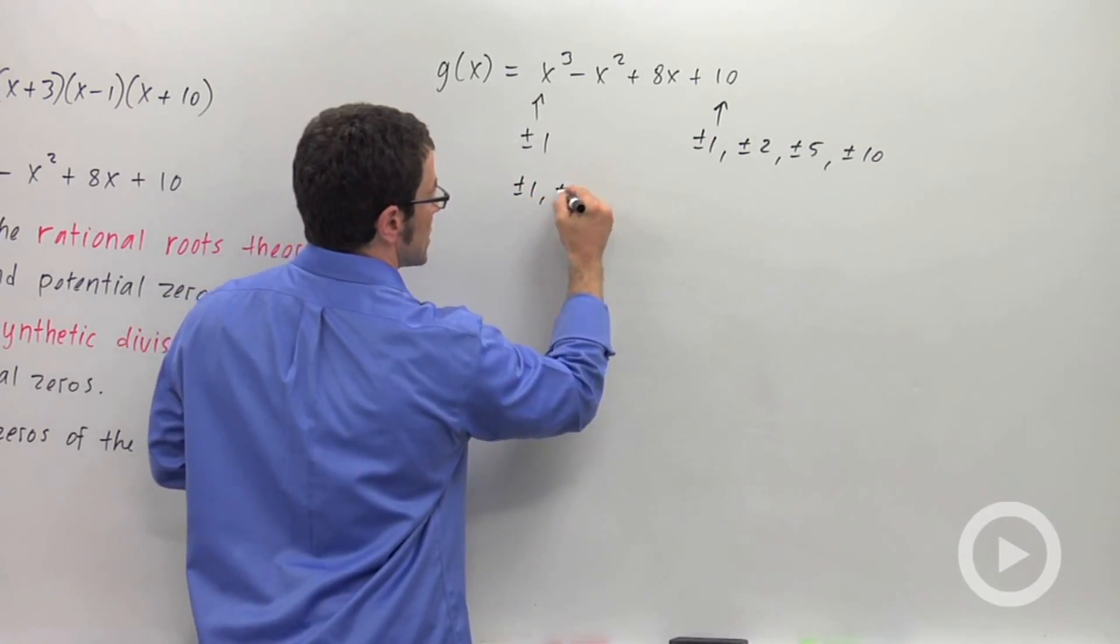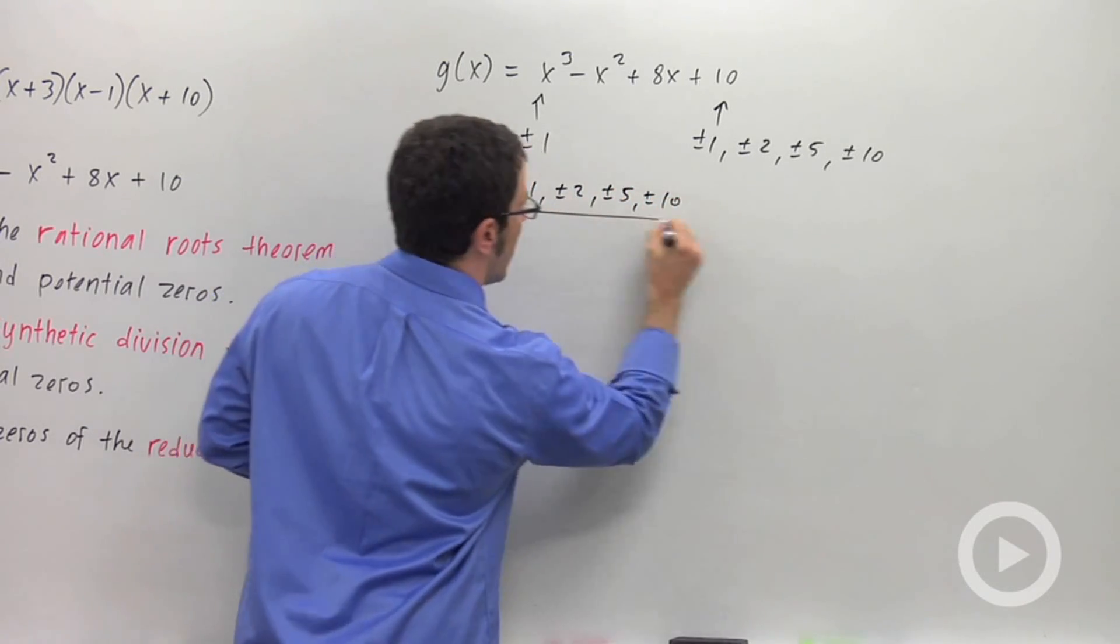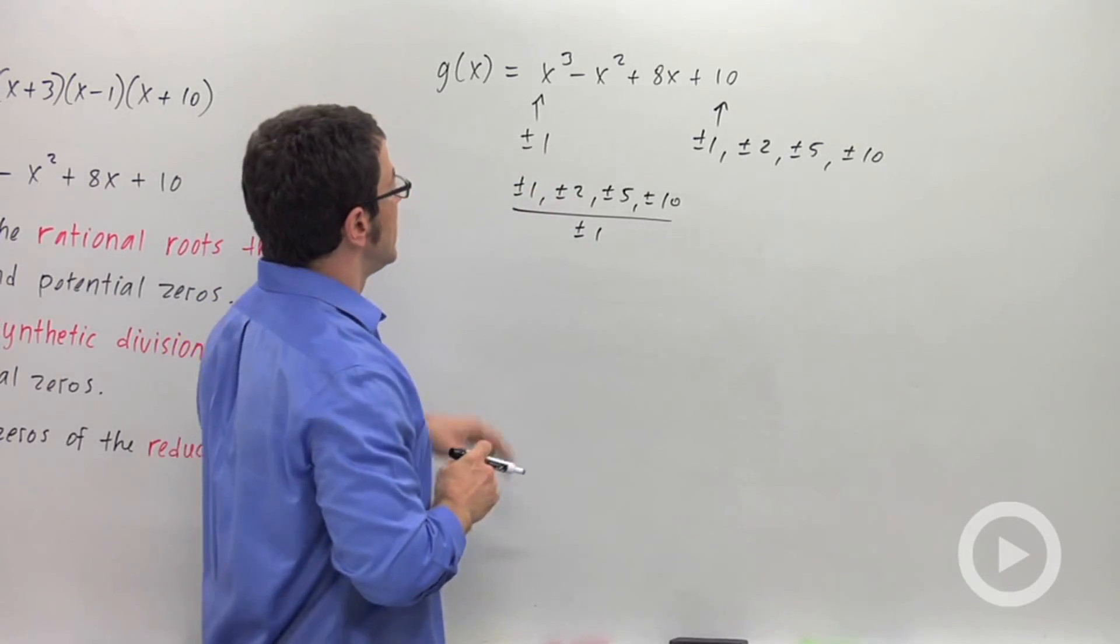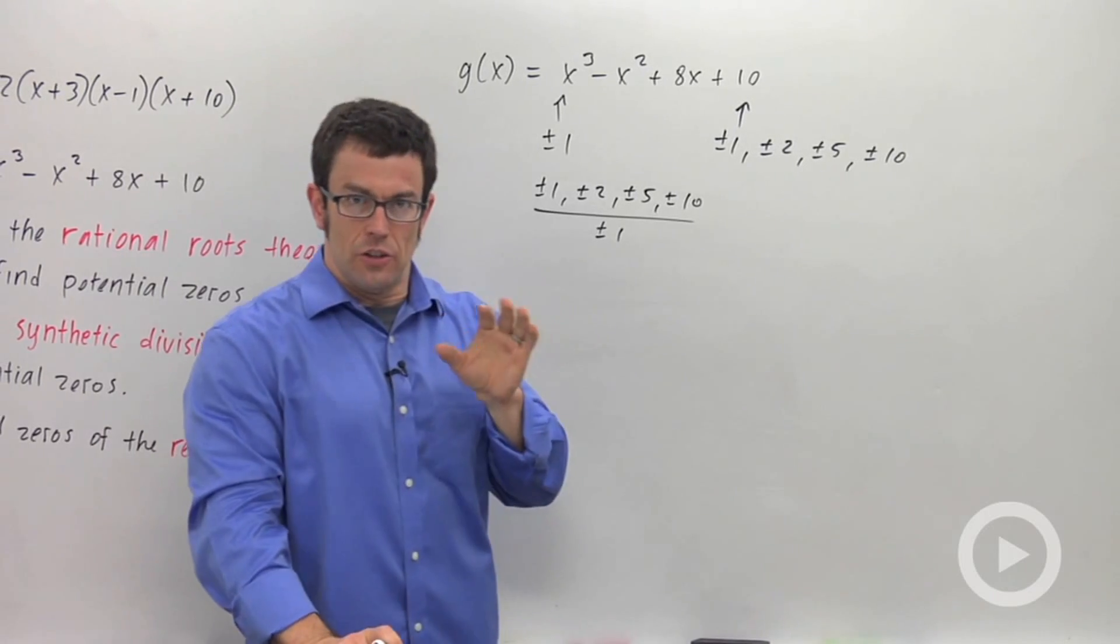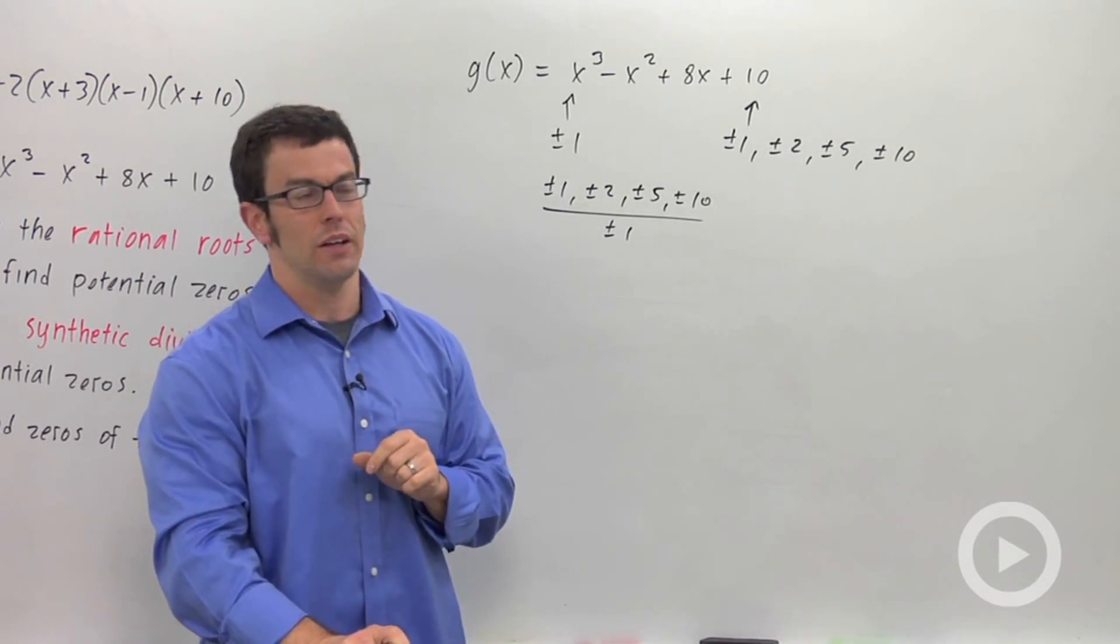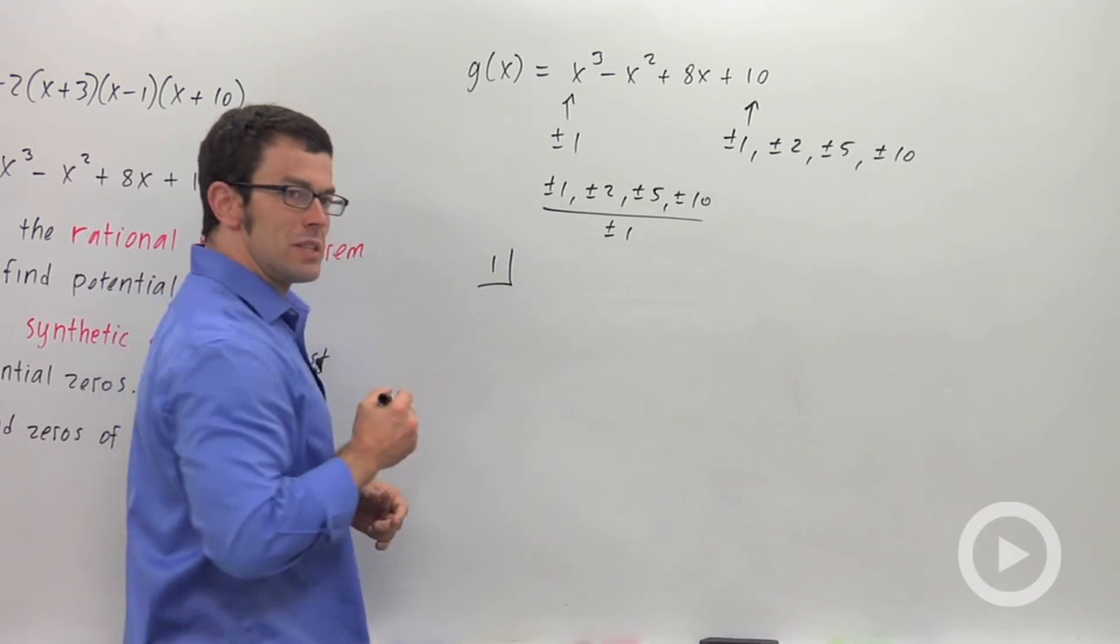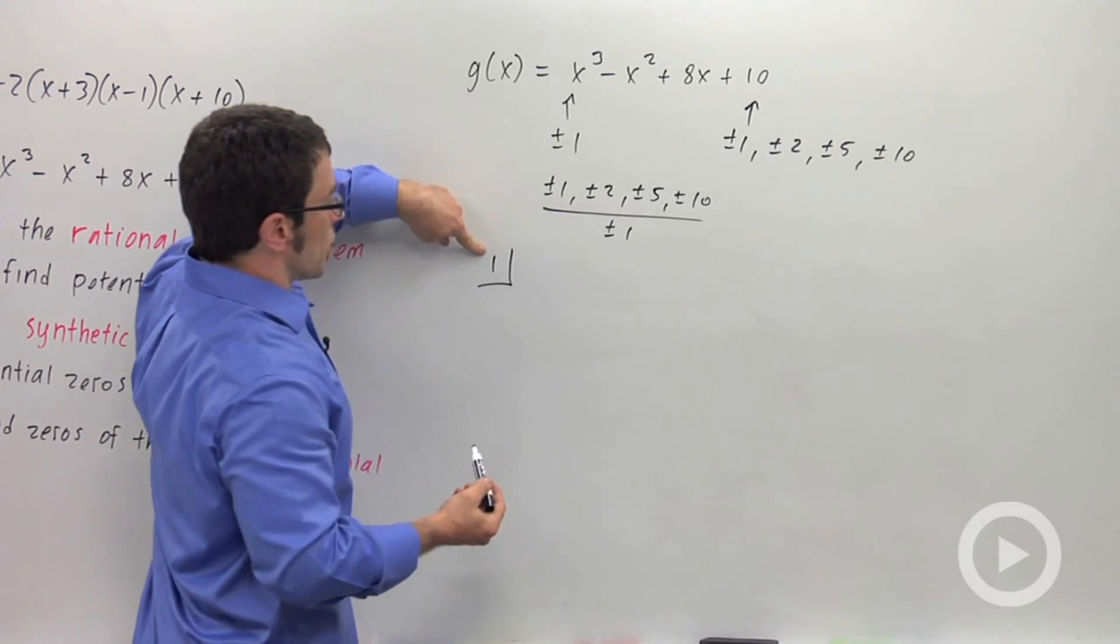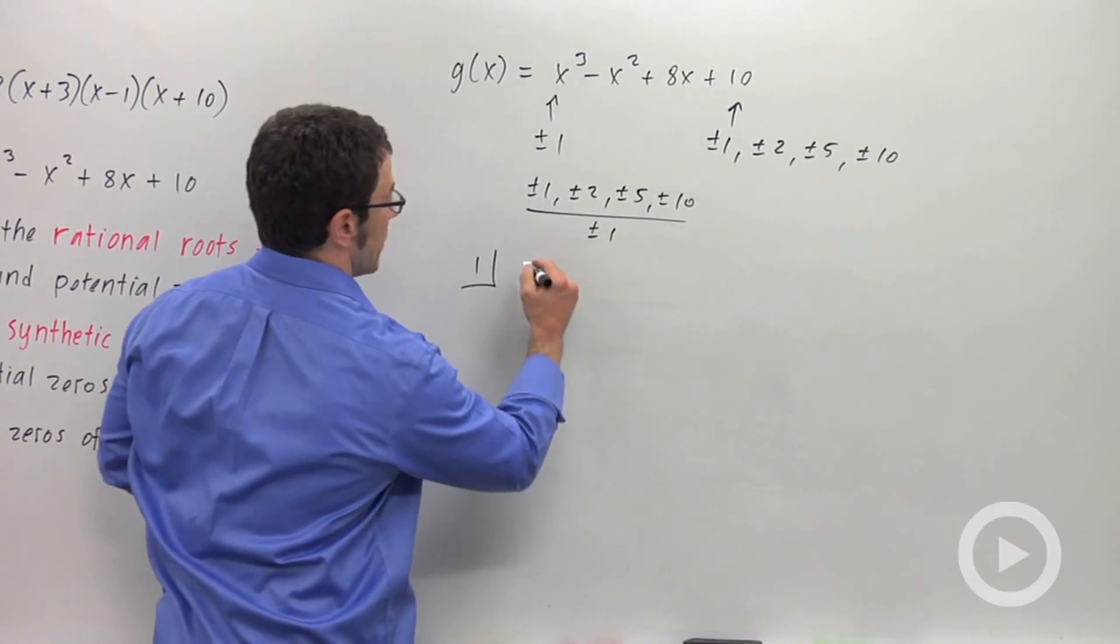Now, the rational roots theorem says that the potential zeros are these integer factors divided by these. So plus or minus 1, plus or minus 2, plus or minus 5, plus or minus 10, all over plus or minus 1. And of course, that's just going to give you the stuff on the numerator, right? This doesn't really contribute anything. So what I usually like to do, and I suggest you do too, is start with the easy ones. Start with 1 and negative 1. So let's start with 1. Now we're going to use synthetic division to test these.